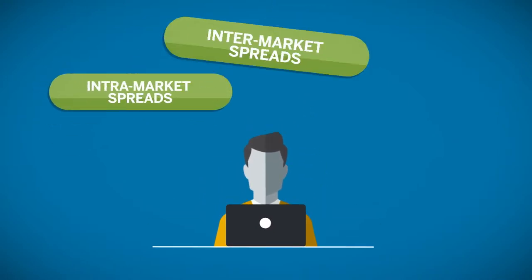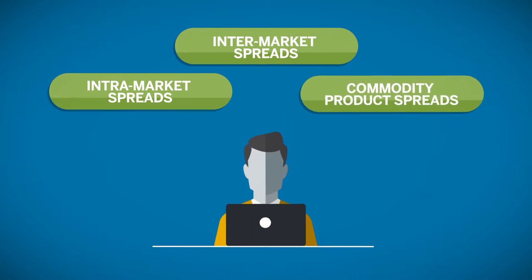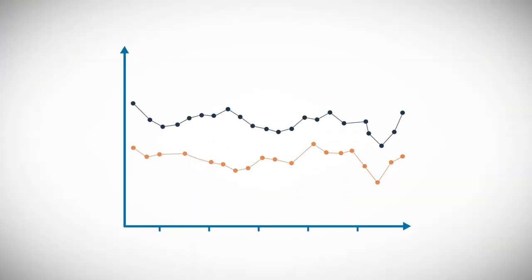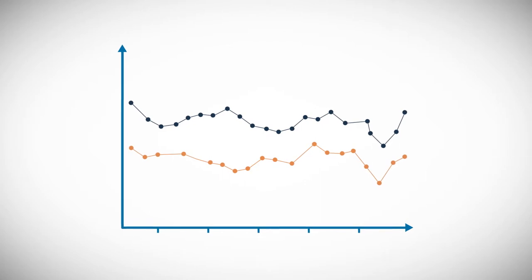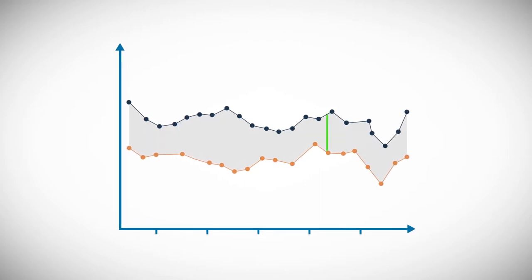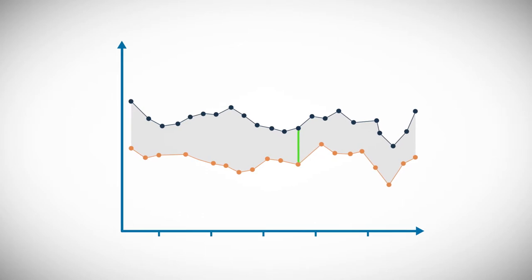Intramarket spreads, intermarket spreads, and commodity product spreads. Participants who use these strategies are more concerned with the relationship between the legs of the spread than the actual prices or direction of the market. Let's take a look at each of these in turn.